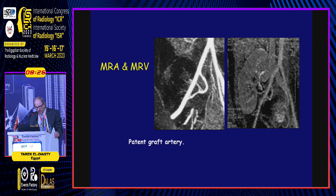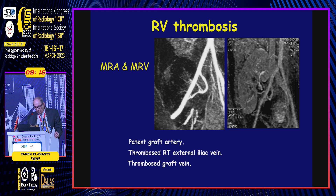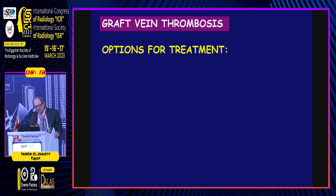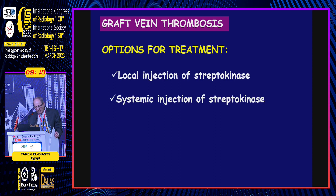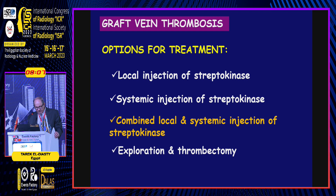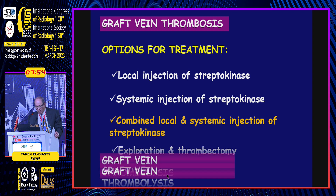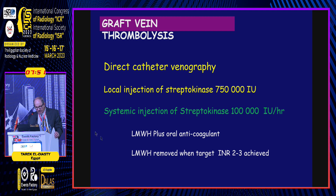MR angiography and venography demonstrate a patent graft artery, thrombosed right external iliac vein, and thrombosed graft vein, establishing the diagnosis of graft venous thrombosis. There are many treatment options. We decided on combined local and systemic injection of streptokinase. If these options fail, the patient is usually subjected to graft nephrectomy. We perform direct catheter venography with local injection of streptokinase, a fractionated dose from a total amount with systemic injection to achieve a target INR of 2 to 3.